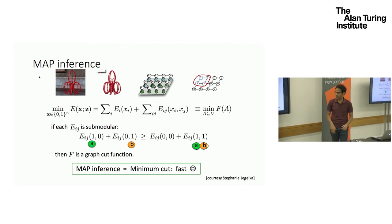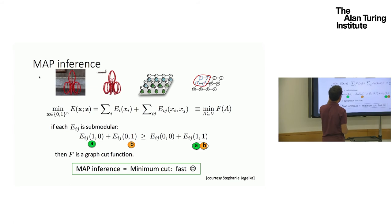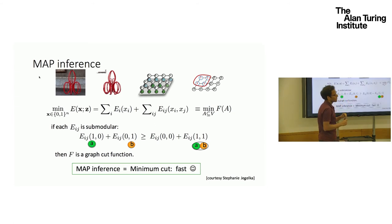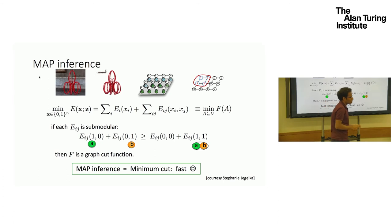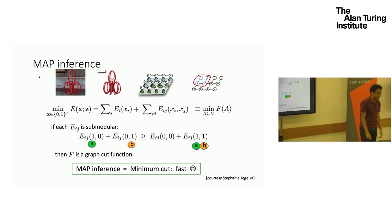And thankfully, there is an additional structure in the energy functions, because the way these are typically specified is the energy function is a summation of two terms. The first is, these are called the unary terms, which model the data likelihood, meaning that given the RGB values of the pixels, what is its probability of taking the zero or one value. And the second term, it's like a prior, and it really helps us to obtain very smooth labelings. So if we were just to use the first term, then we would end up with noisy labeling, which you do not want. But the second term helps us to smooth out and give us cleaner segmentations.